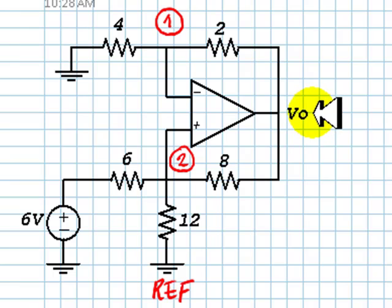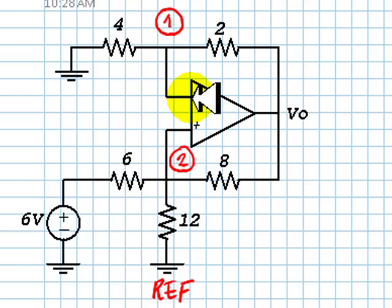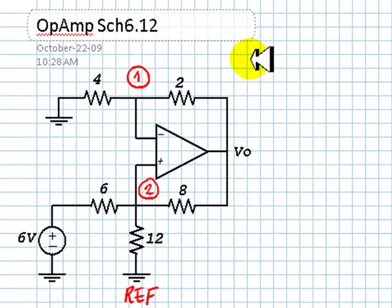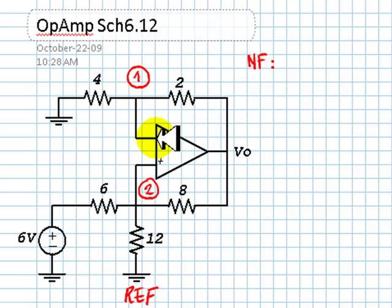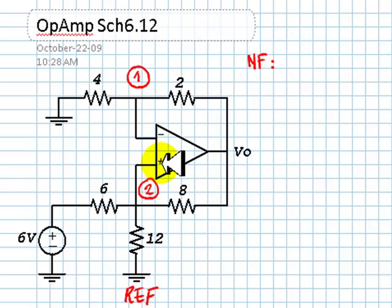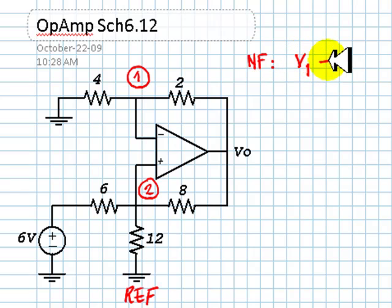Which equation is that? The one that answers the question we always ask: is there negative feedback? The output of the op-amp is connected to the inverting input through a resistor, so there is negative feedback. We can write the negative feedback equation: Vn equals Vp. If there is negative feedback, Vn is going to be the same value as Vp. In this case, Vn is V1 and Vp is V2, so the negative feedback equation is V1 equals V2.